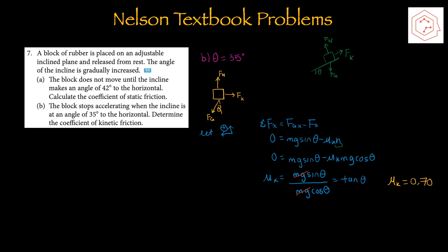For part b, the block stops accelerating when the incline is at 35 degrees to the horizontal — determine the coefficient of kinetic friction. Since the block has stopped accelerating, the net force in the x component is again zero. Applying the same approach but using kinetic friction, mu k equals tan theta, so mu k = 0.70. This makes sense because the coefficient of kinetic friction is less than that of static friction.